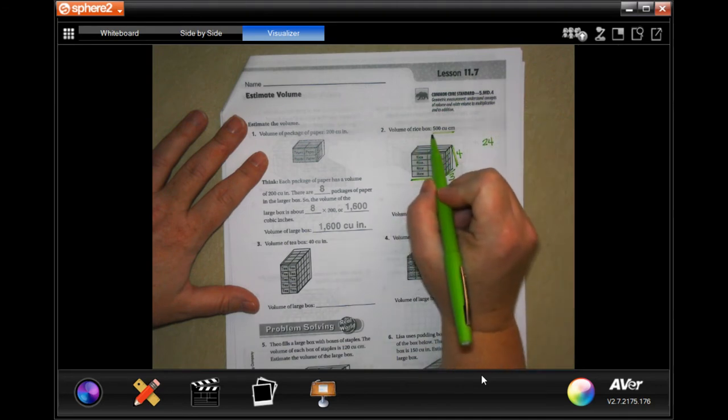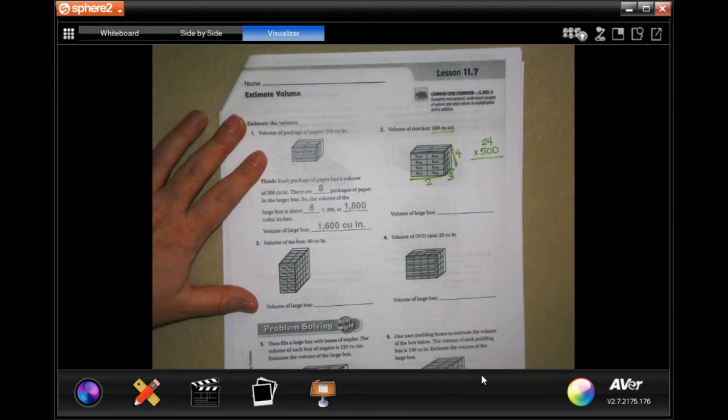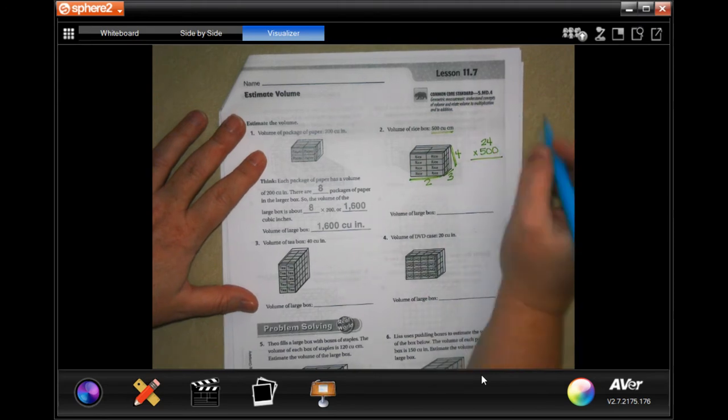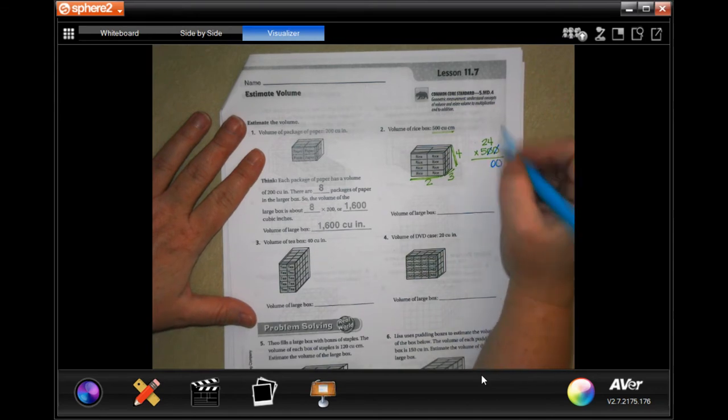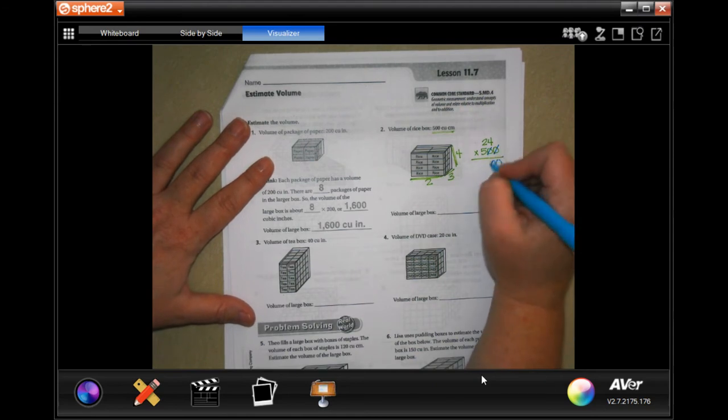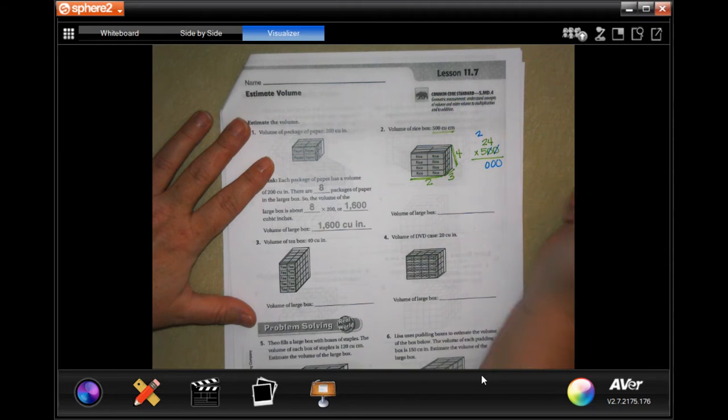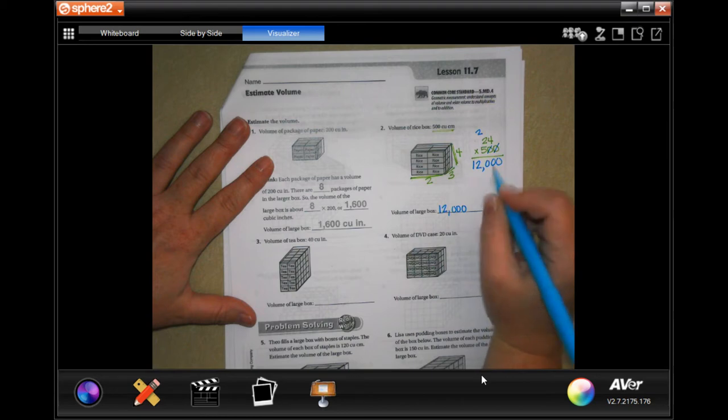Now, each one of those boxes holds 500, so we need to multiply what we got by 500. I put 500 on the bottom because I'm going to take those two zeros and just put them on the end. Instead of multiplying everything by two zeros, we're just going to take them off, put them on the end. Five times four is 20, carry the two. Five times two is 10, plus two more is 12. So we have 12,000 cubic centimeters.